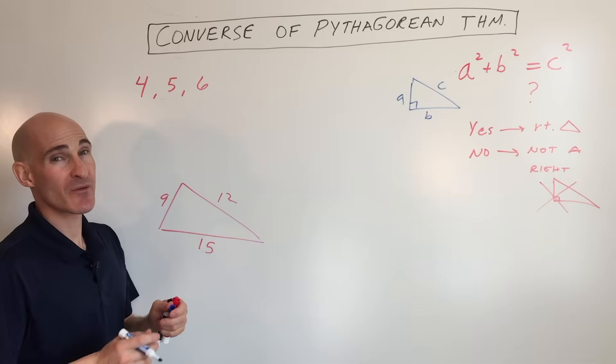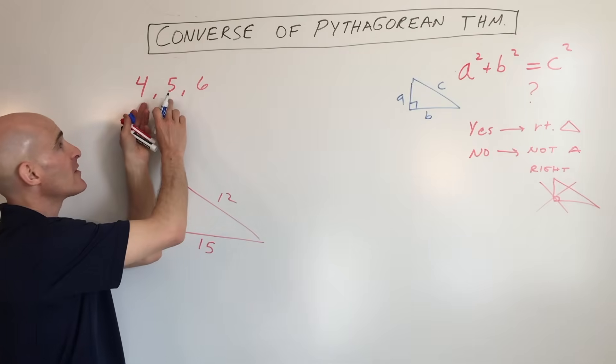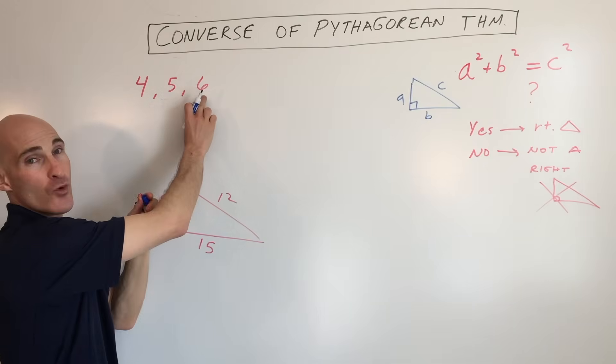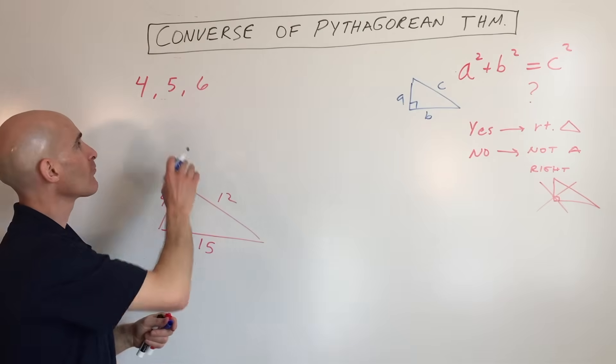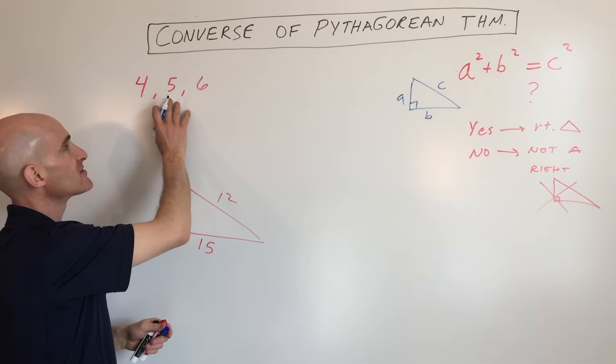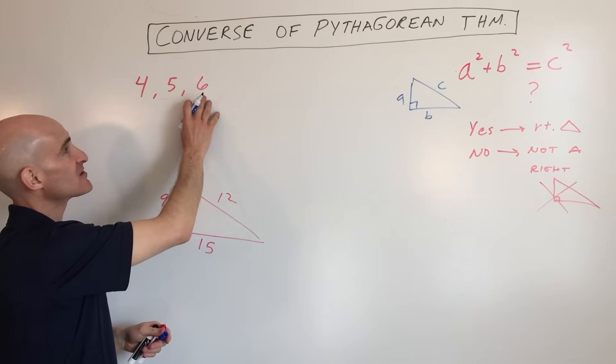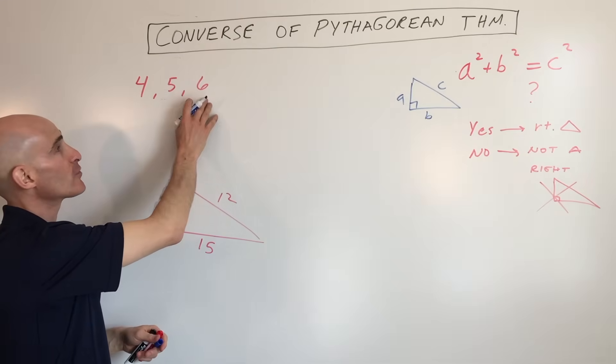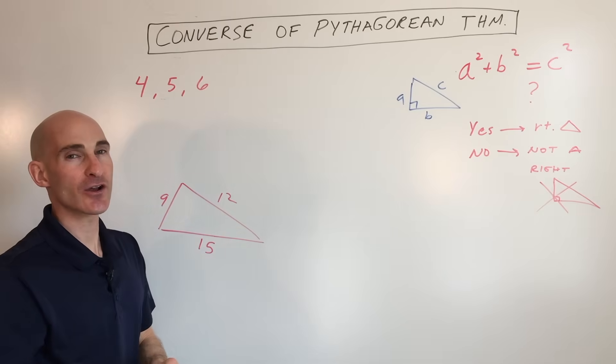Well, first thing you want to do is you want to make sure it forms a triangle. So you want to make sure that any two sides add up to more than the third side. That's called the Triangle Inequality Theorem. But you just want to make sure that they're going to form a triangle. So 4 plus 5 is 9. That's greater than 6. 5 plus 6 is 11. That's greater than 4. And 4 plus 6 is 10. That's greater than 5. So it does form a triangle.